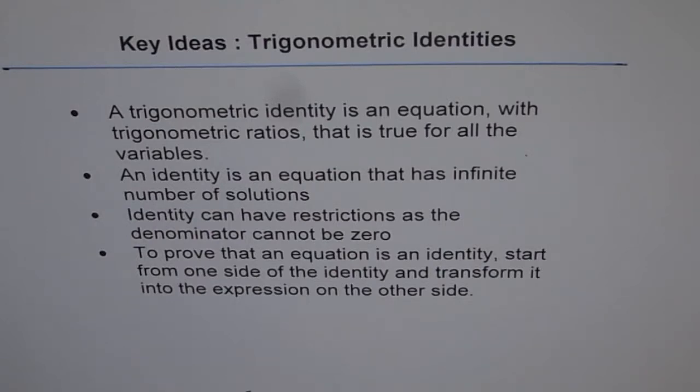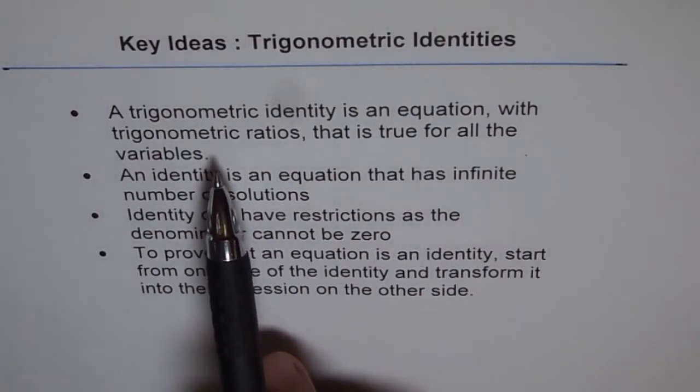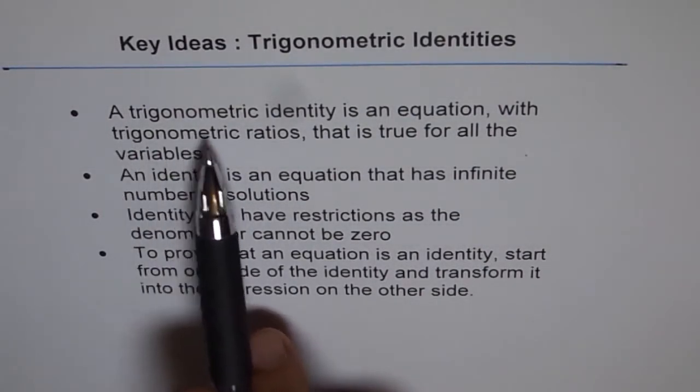I'm using the word 'to prove' rather than 'solve' because in trigonometric identities you basically have to prove that the left side is equal to the right side for all values in the domain. Here are the things which you should keep in mind.